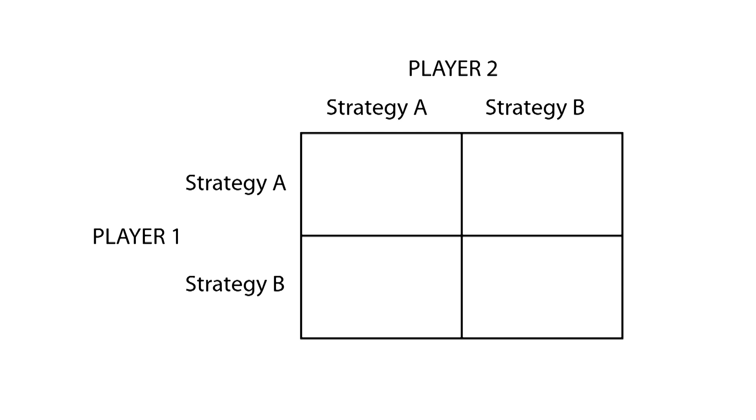Now let's learn how to read this matrix. We start by analyzing the first player. Let's say player 1 chooses strategy A. In this case, we know we only have to look at the cells in the first row, since player 1 won't use strategy B.